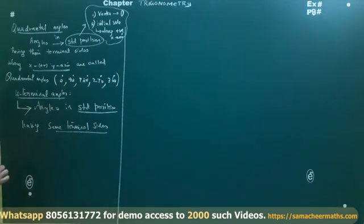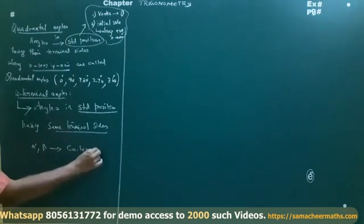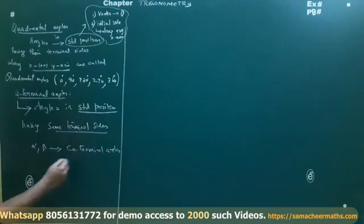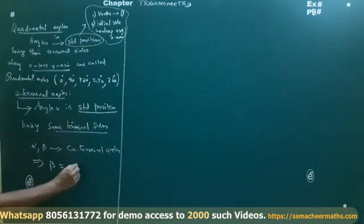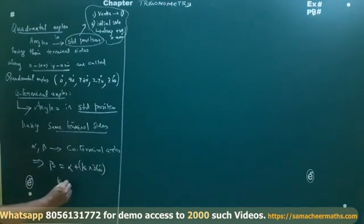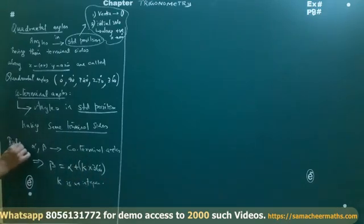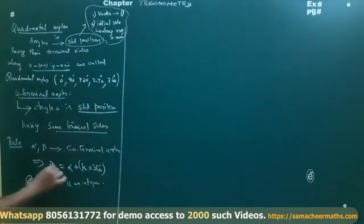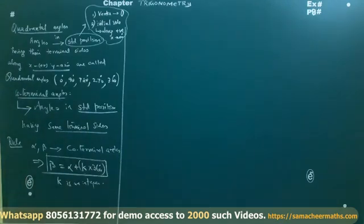So, if alpha and beta are co-terminal angles, then beta equals alpha plus k times 360, where k is an integer. Beta is equal to alpha plus 360k, where k is an integer.